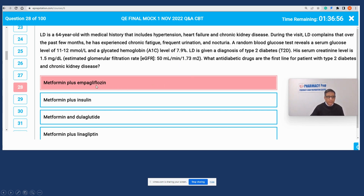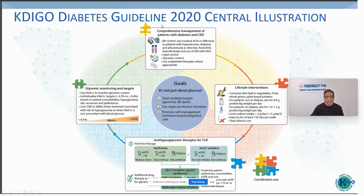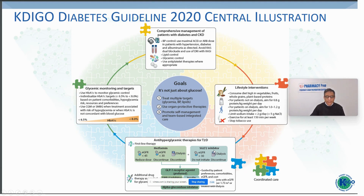As per the pharmacy prep answer, we are selecting metformin plus empagliflozin. According to the KDIGO Diabetes Guidelines 2020, the best anti-hyperglycemic agents shown to be renal-protective and cardioprotective as first-line therapies are metformin and SGLT2 inhibitors. The SGLT2 inhibitor here is empagliflozin, and since the patient still has 50 mL/min creatinine clearance, both drugs can still be used. Now let's put this question to the test with ChatGPT.